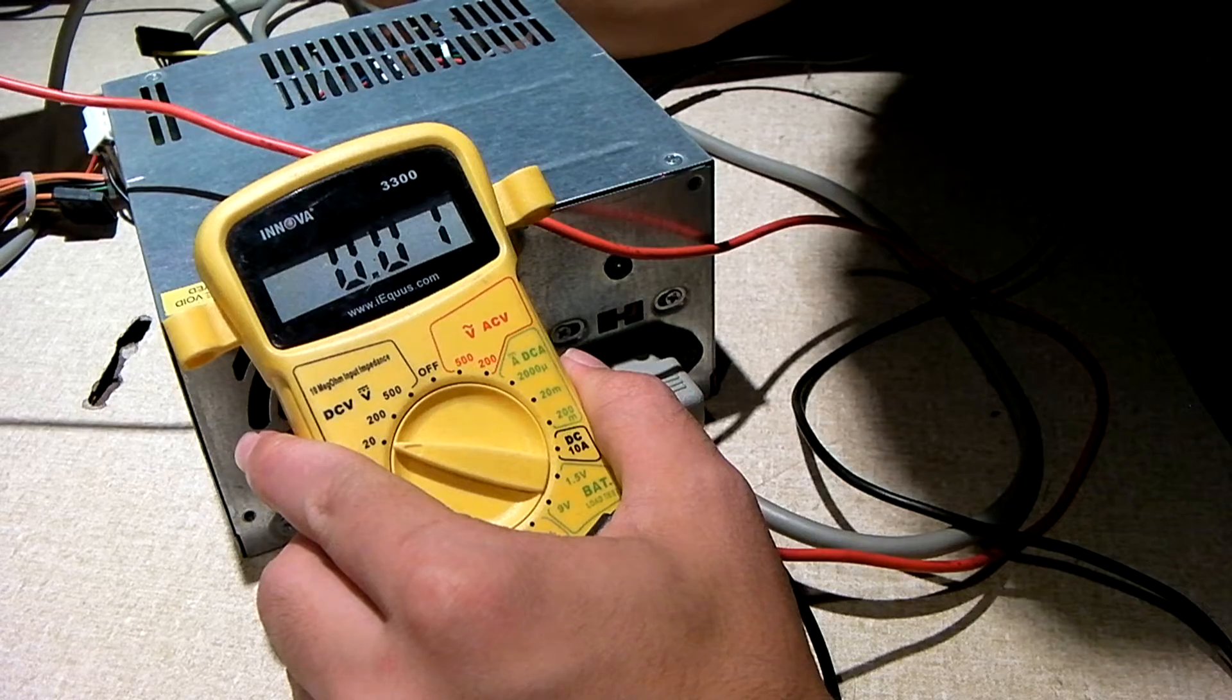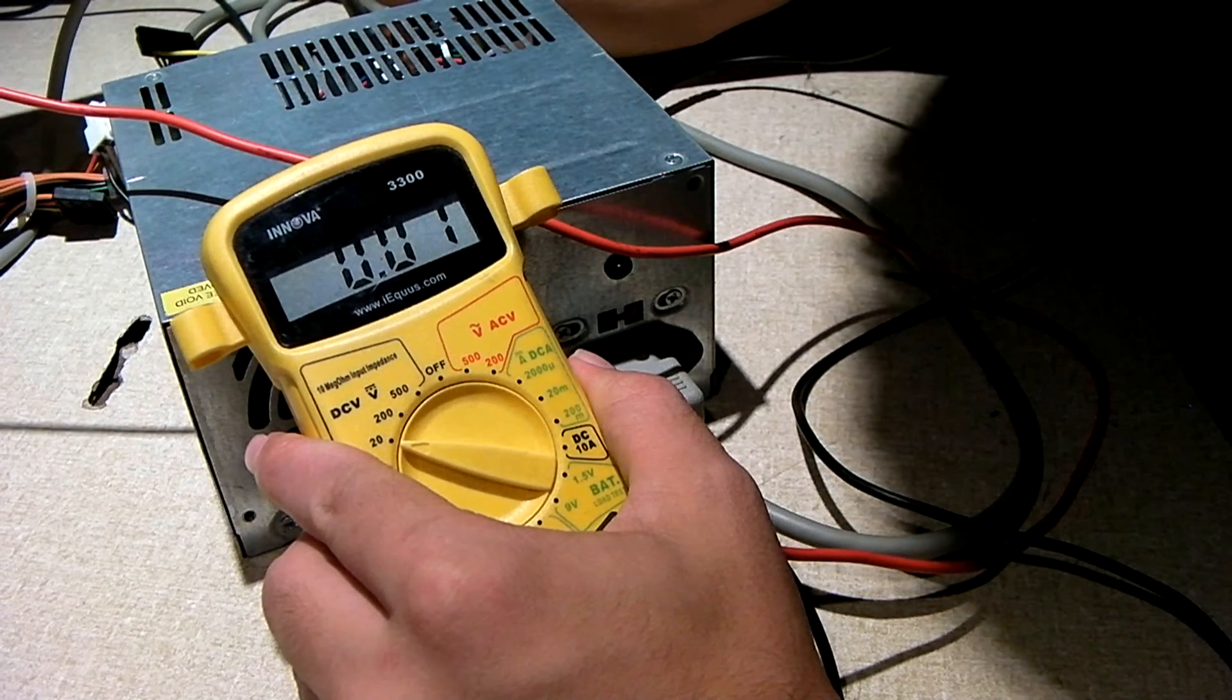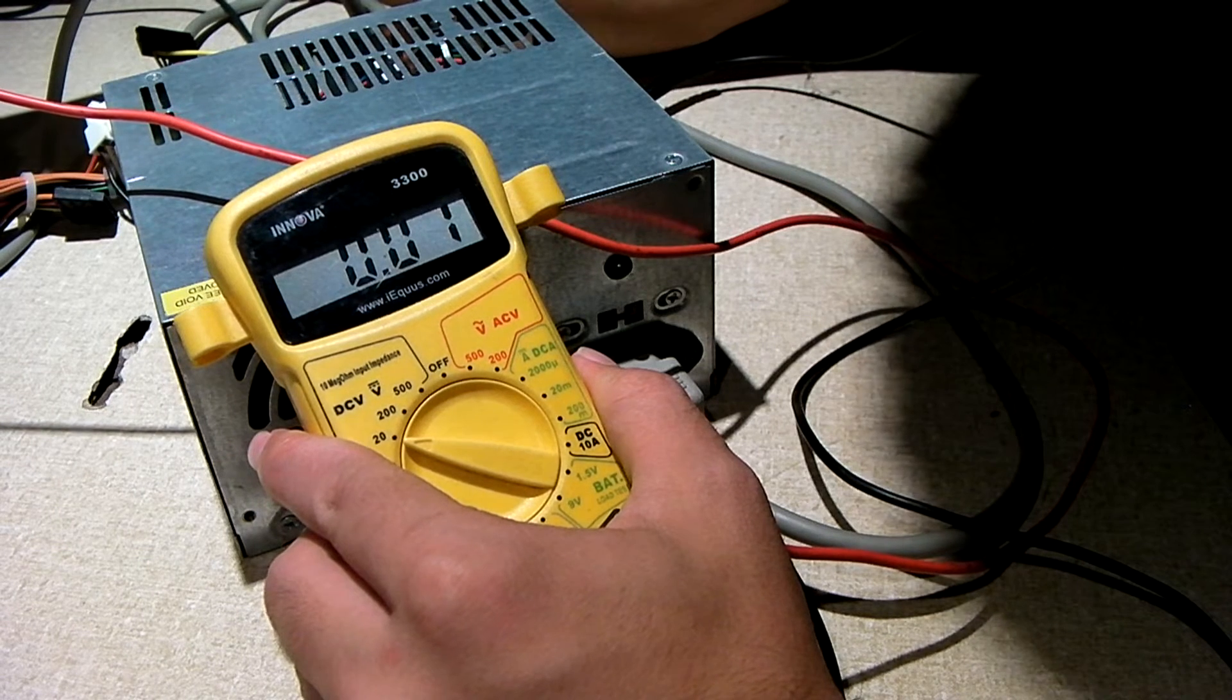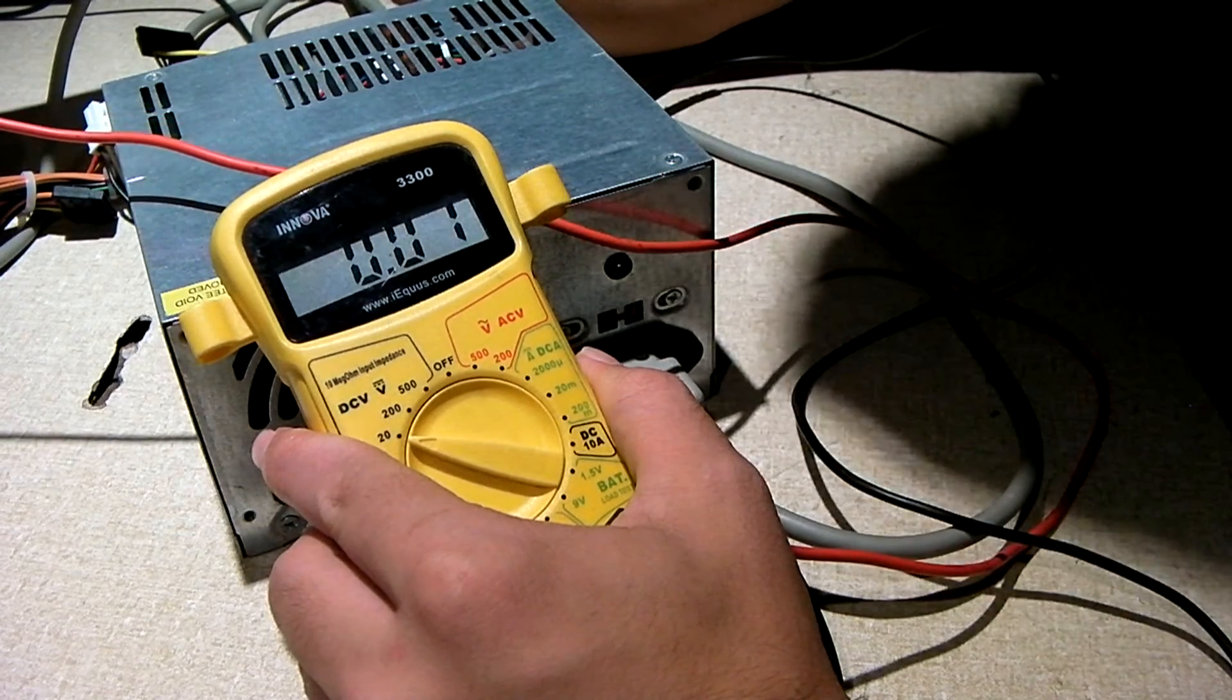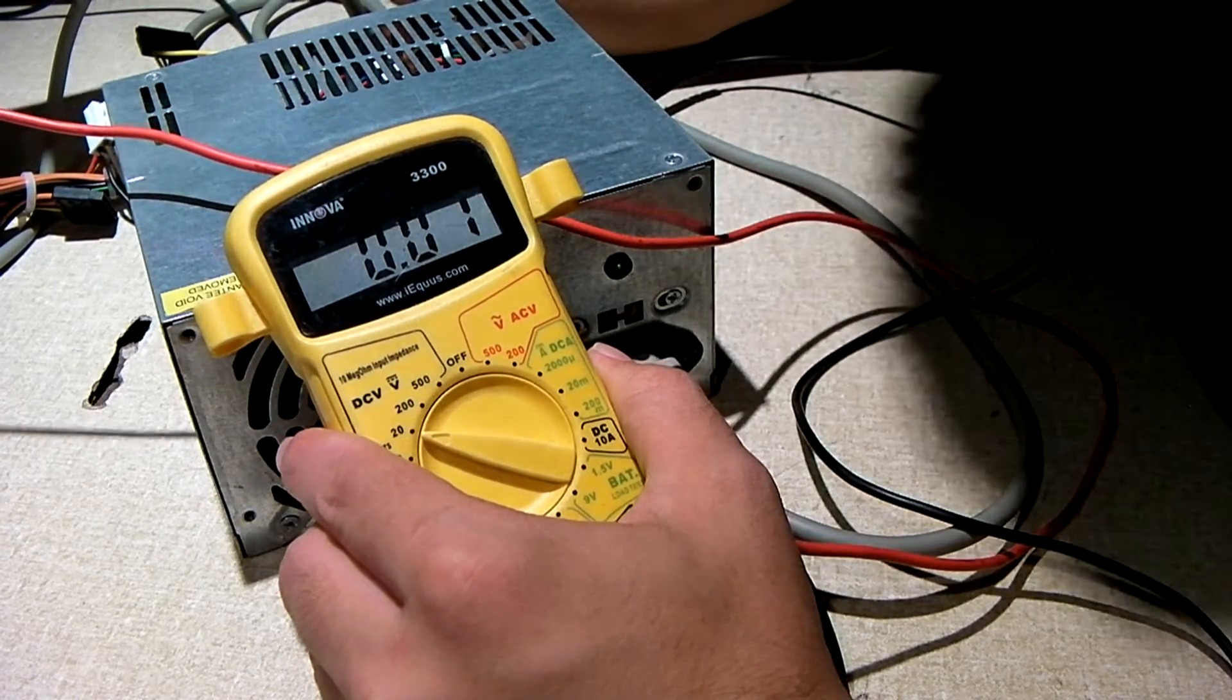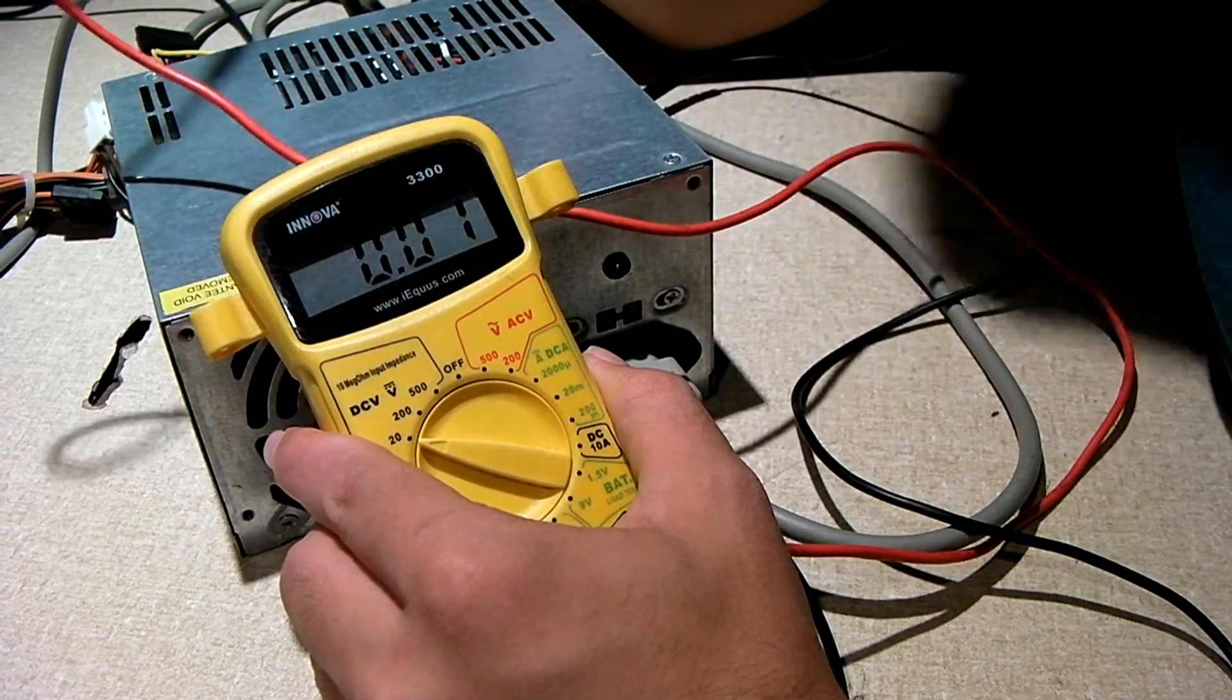The gray wire is the power good feed. And it sends a logic signal to the motherboard to tell it if the power supply checks out okay to switch on and actually post. When power good is active, you should have 5 volts off the power good wire, but we're getting zero. So, despite the power supply outputs being okay, the motherboard will refuse to post because power good has not been satisfied.